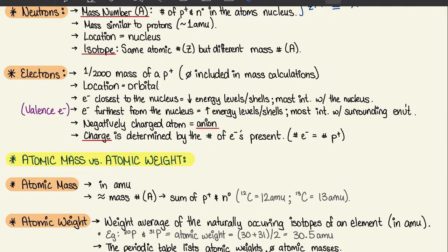The electrons that are further away from the nucleus may be written as valence electrons. When we get into organic chemistry, or later in this chapter, we're going to come across the term valence electrons a lot — that's the number of electrons furthest away from the nucleus. Electrons, unlike protons, are negatively charged, so they're going to be written as anions. The charge is determined by the number of electrons present — the more electrons, the higher the charge.